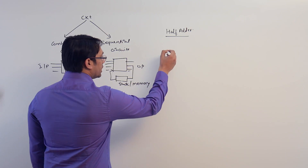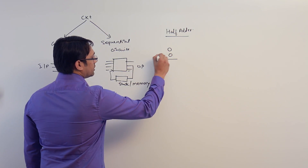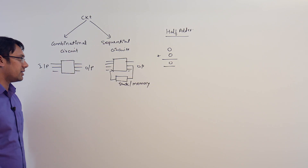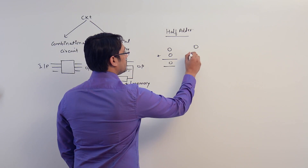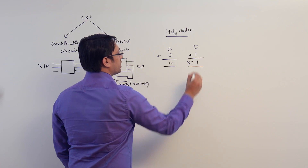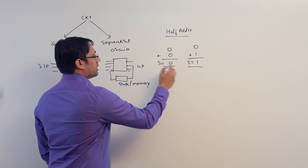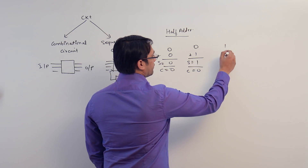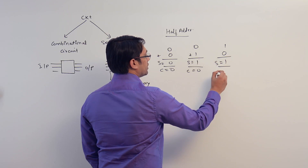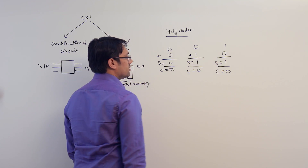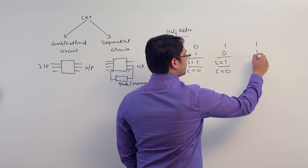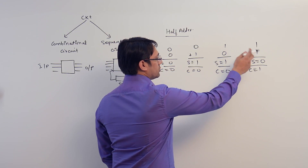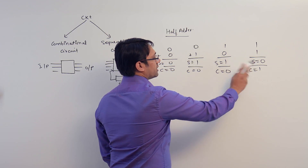We are performing a binary addition here, and I'm assuming you already know what binary addition is. If you add 0 and 0, the sum is 0 and the carry is 0. If you add 0 and 1, the sum is 1 and the carry is 0. If you add 1 and 0, the sum is 1 and the carry is 0. If you add 1 and 1, the sum is 0 and the carry is 1, because 1 plus 1 is 2, which is 1,0 in binary.